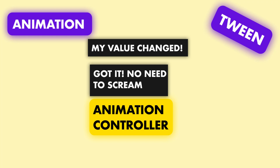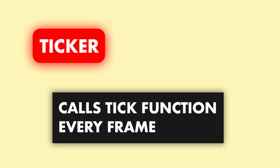The last part of the animation is a ticker class. The ticker class listens to the frame callback and calls a tick function that passes the elapsed duration between the current frame and the last frame to the ticker listener. In our case, the ticker listener is the controller.